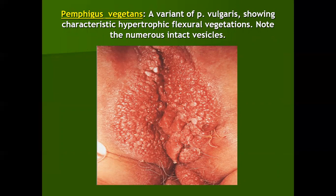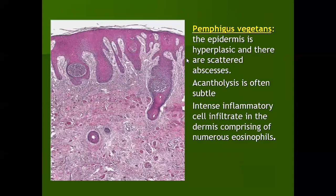Pemphigus vegetans is a variant of pemphigus vulgaris. It is called pemphigus vegetans if the lesions are seen only in the flexures, and vegetating lesions of pemphigus vulgaris if other lesions are also present. It is characterized by hypertrophic flexural vegetations and numerous intact vesicles. Histologically, there is hyperplasia of the epidermis with an intense inflammatory cell infiltrate comprising mainly eosinophils, sometimes neutrophils, and acantholytic cells within these infiltrates.